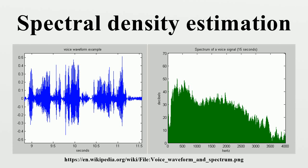For perfect reconstruction, the spectrum analyzer must preserve both the amplitude and phase of each frequency component. These two pieces of information can be represented as a two-dimensional vector, as a complex number, or as magnitude and phase in polar coordinates.